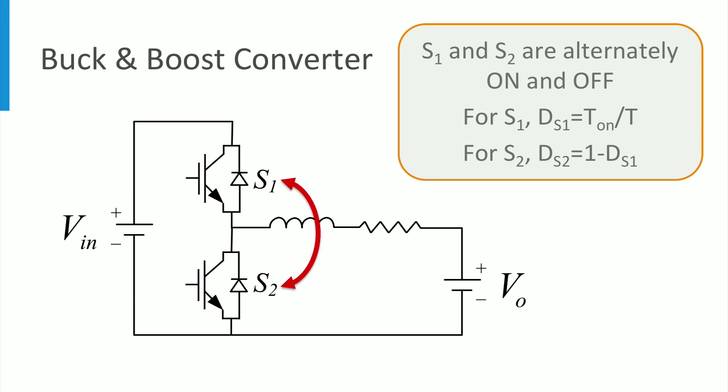It follows that the duty cycle of S1 is D equal to T_on divided by T while that of S2 is 1 minus D. Let us analyze the boost operation.